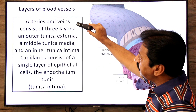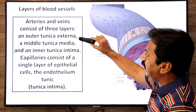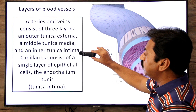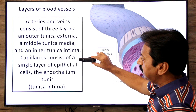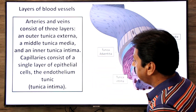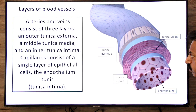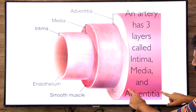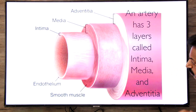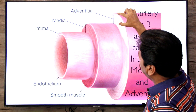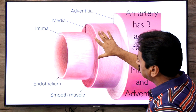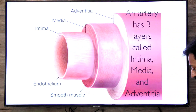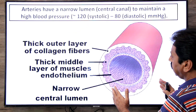To summarize: arteries and veins consist of three layers — outer tunica externa made of collagen fibers, middle tunica media made of smooth muscles, and inner tunica intima made of endothelial cells. For capillaries, they consist of a single layer of epithelial cells — the endothelium, tunica intima — made of endothelial cells.